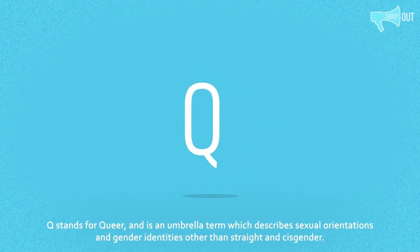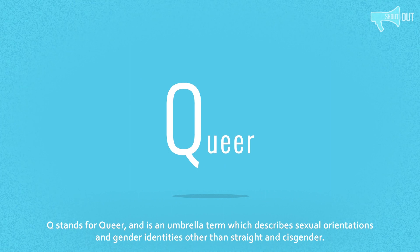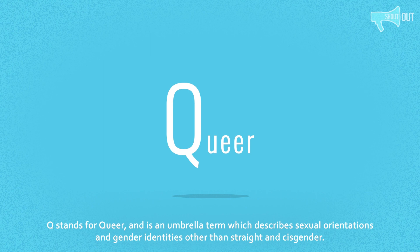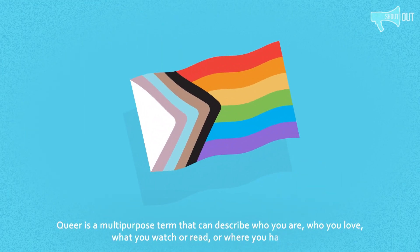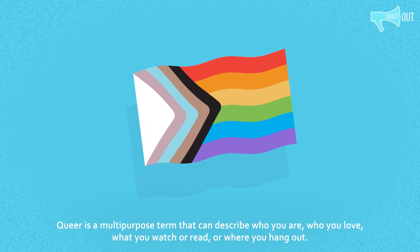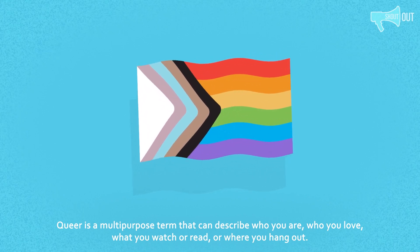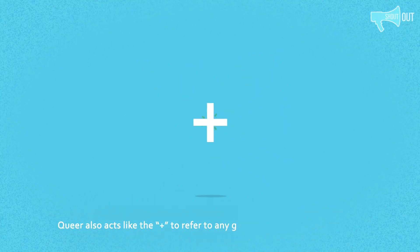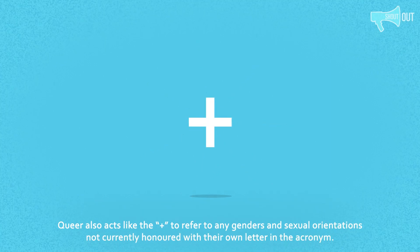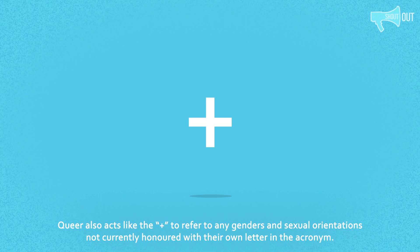Q stands for Queer and is an umbrella term which describes sexual orientations and gender identities other than straight and cisgender. Queer is a multi-purpose term that can describe who you are, who you love, what you watch or read, or where you hang out. It also acts like the plus sign to refer to any genders and sexualities not currently honoured with their own letter and acronym.